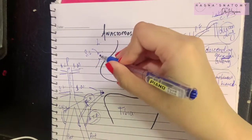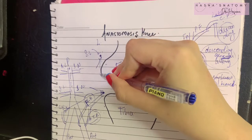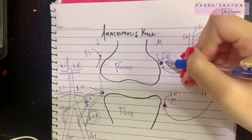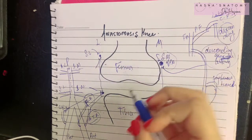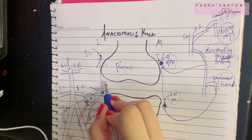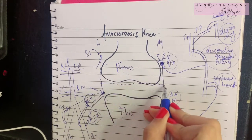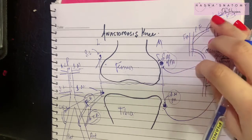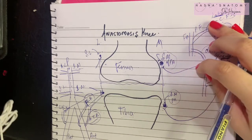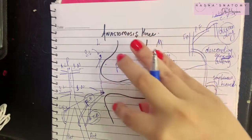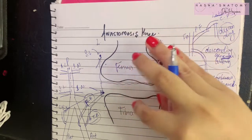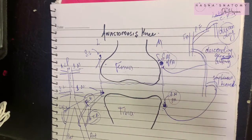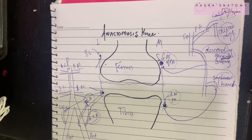The medial and lateral arteries also form longitudinal anastomoses with each other, as well as transverse anastomoses between each other, and this completes the anastomosis of the knee joint. The major function of this anastomosis is to supply blood to the knee joint. Thank you so much for watching — don't forget to subscribe to my channel.